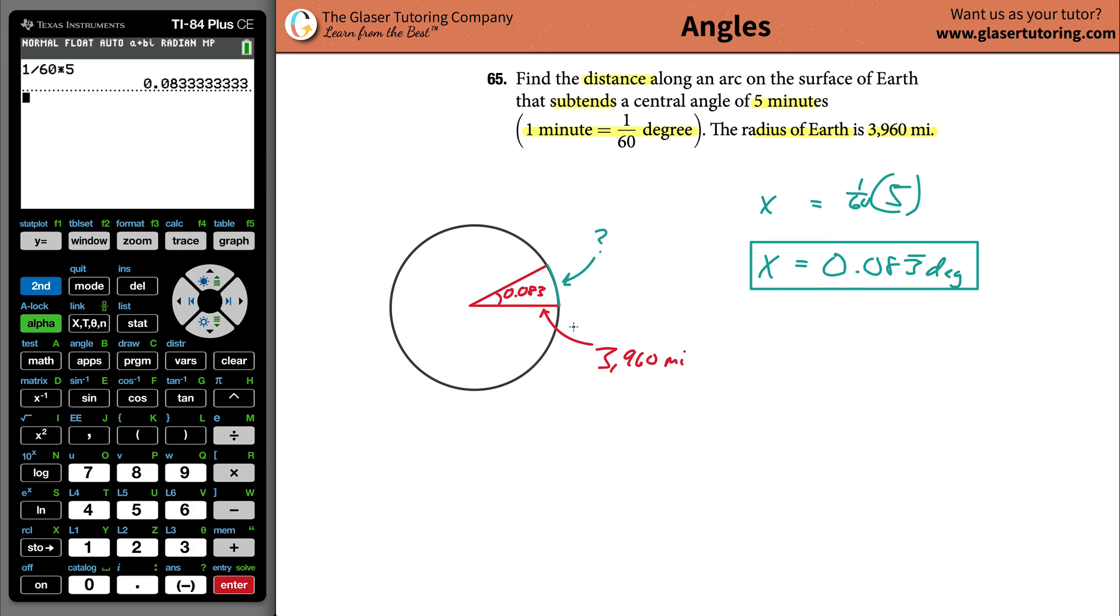Well, you can set up another proportion, actually, thinking about the circumference. If you know that the circumference of a circle is equal to 2 pi r, and you also know that, remember, the circumference is the whole length of the entire outer edge of the circle.